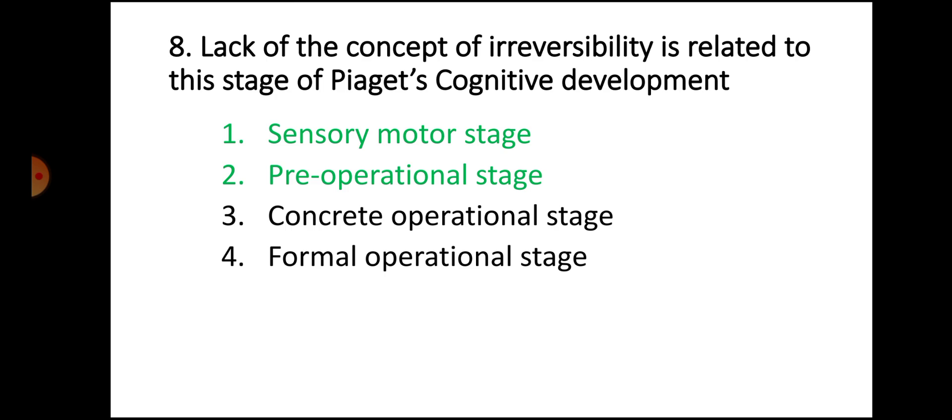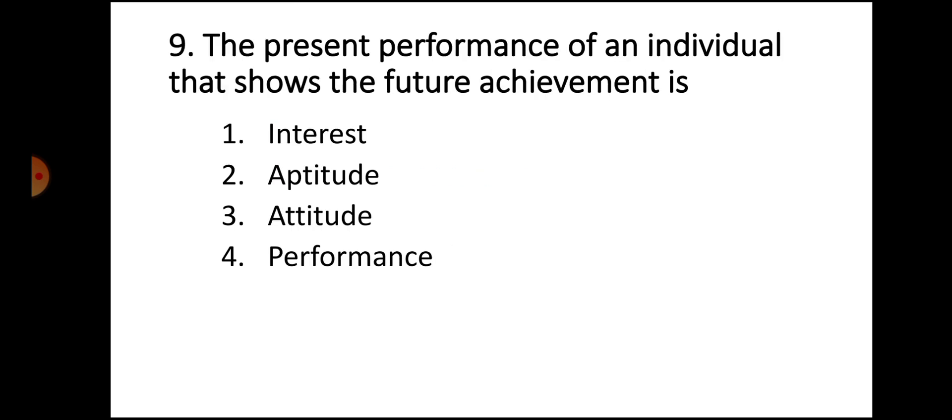Question number 9: The present performance of an individual that shows the future achievement is: Option 1 interest, Option 2 aptitude, Option 3 attitude, Option 4 performance. The correct answer for this ninth question is Option 2, aptitude.